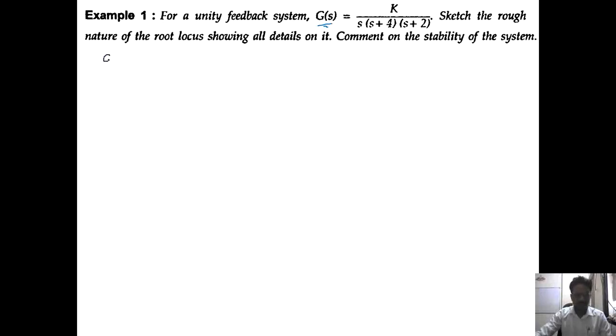So our open-loop transfer function G(s)·H(s) = k / [s(s+4)(s+2)]. The very first rule is number of poles and number of zeros. Values of s in the denominator are known as poles, and values in the numerator are known as zeros. There is no value in the numerator, so z = 0. The poles are p = 3, with values at 0, -4, and -2.